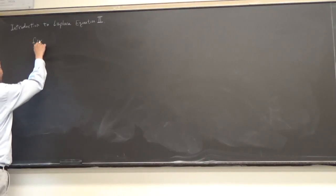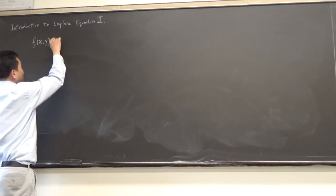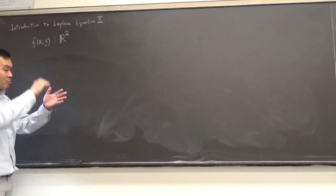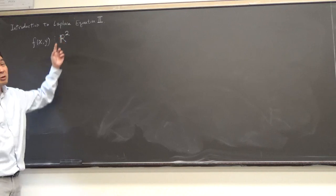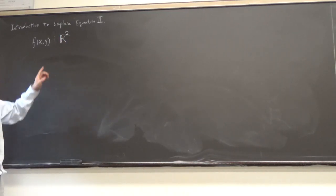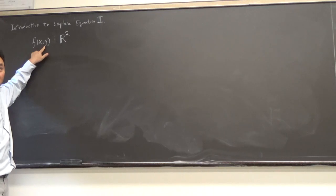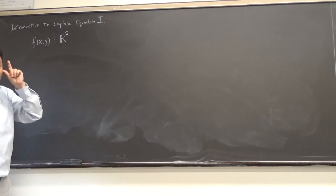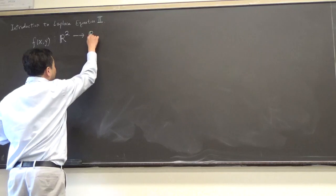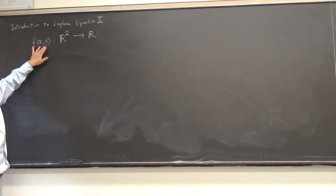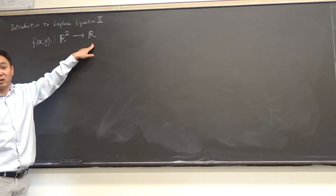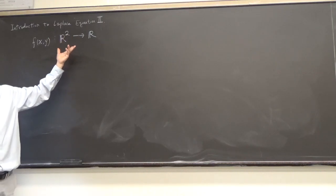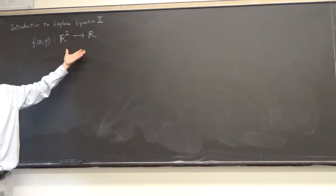If you have a function f from R² to R — R² meaning a pair of real numbers — you plug in two real numbers and out comes one real number. So f takes two values as input and gives you one value as output. Such a thing is called a multivariable function, or sometimes in physics they call it a scalar field.